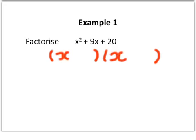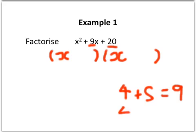Now we need to look for two numbers that add together to give 9 and multiply together to give 20. That one's pretty easy this time. 4 add 5 is 9, and 4 times 5 equals 20. So in terms of factorising it, it's going to be x plus 4 and x plus 5.